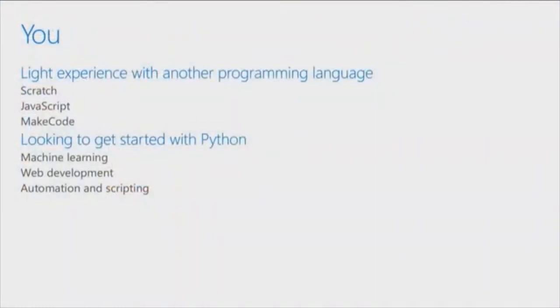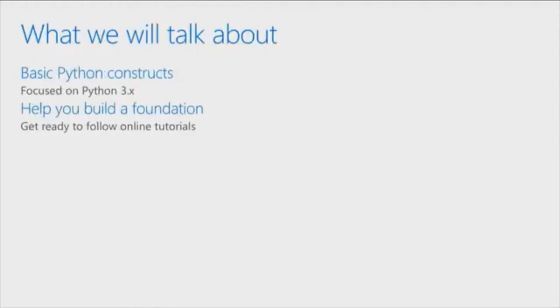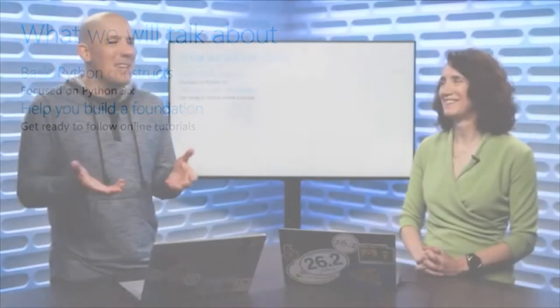We're going to try and give you a foundation to help you go down that path. We're going to cover the Python constructs — not necessarily a lot of basic programming concepts themselves, but how to do things inside of Python. It's worth mentioning that we are going to be doing Python version 3; more on versions later. Everything we'll be doing, with really one or two exceptions, would actually work with Python 2 as well. Our real goal here is that when you finish this course, you can go to an online tutorial and be able to follow it. There might be some new things to learn, but hopefully we'll give you enough knowledge to work your way through tutorials and do more self-paced learning.